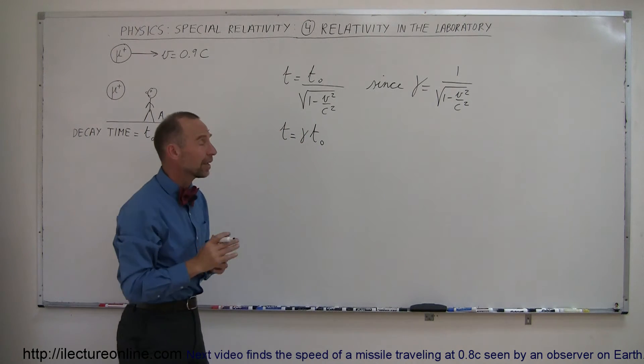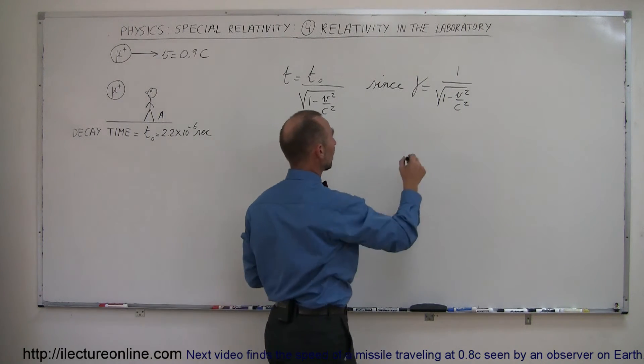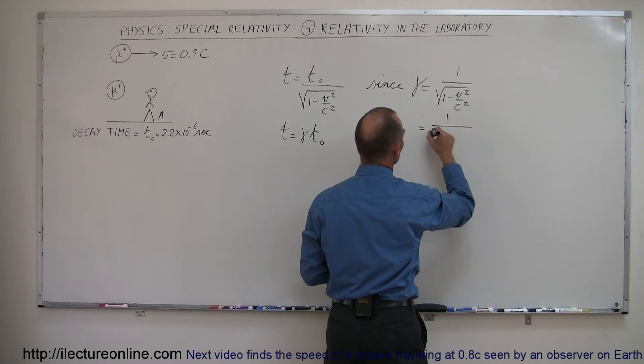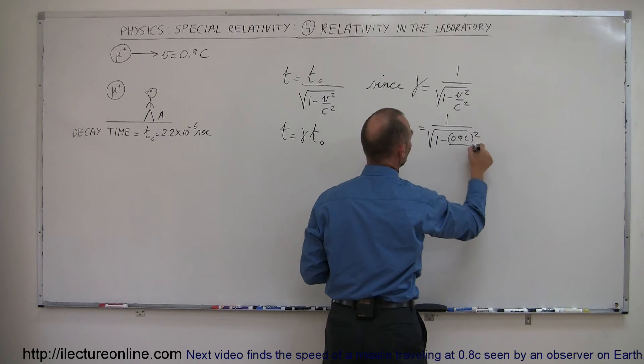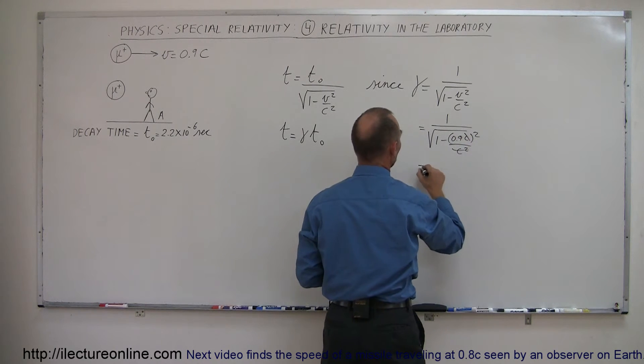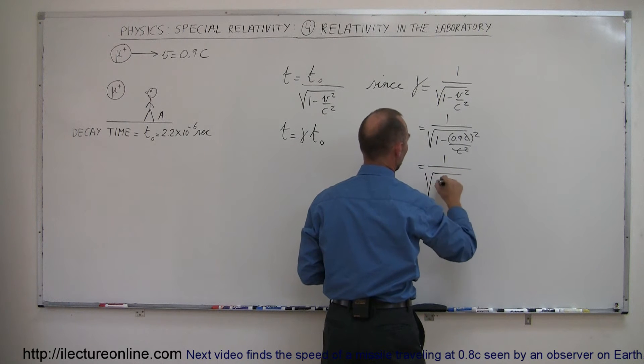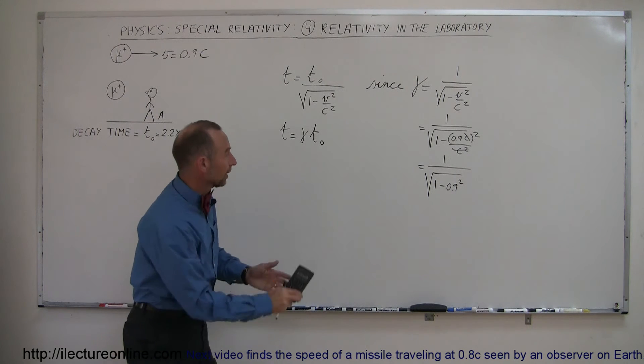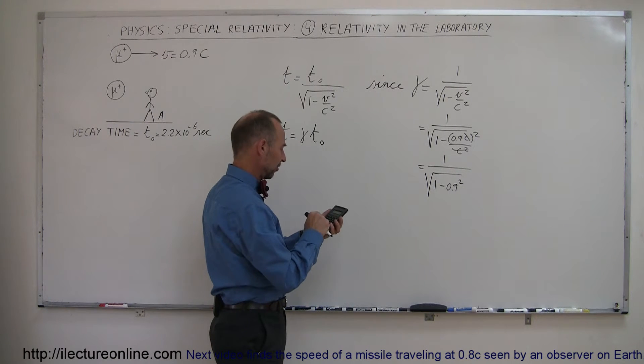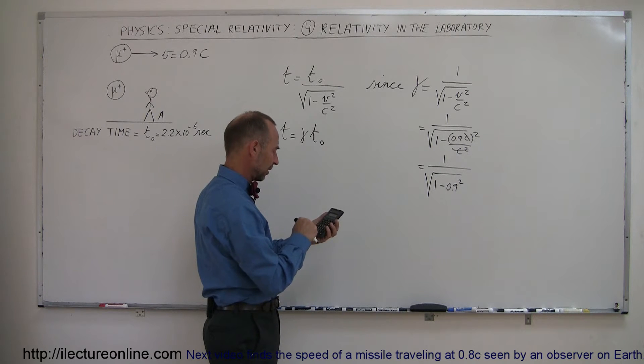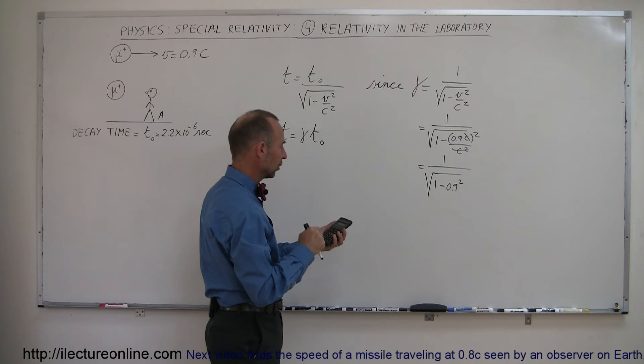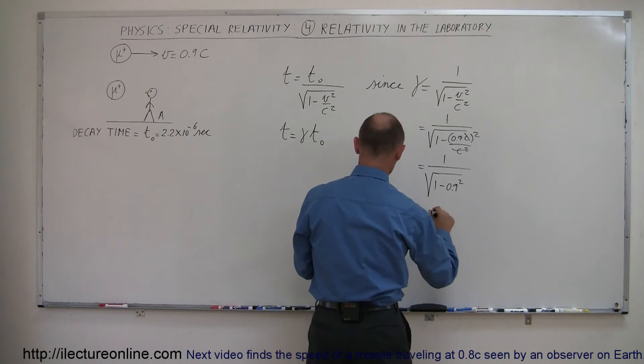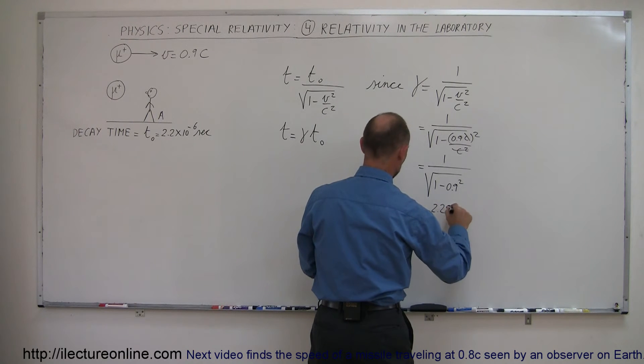So let's find out what gamma is in this case, when the speed is 0.9 c. So this would be equal to 1 over the square root of 1 minus 0.9 c quantity squared divided by c squared. Of course the c's cancel out and so that's equal to 1 over the square root of 1 minus 0.9 squared. And let's see here, my calculator will let us know how much that is. So 0.9, we square that, we subtract that from 1, take the square root of that and take the inverse and it looks like gamma is equal to 2.294.